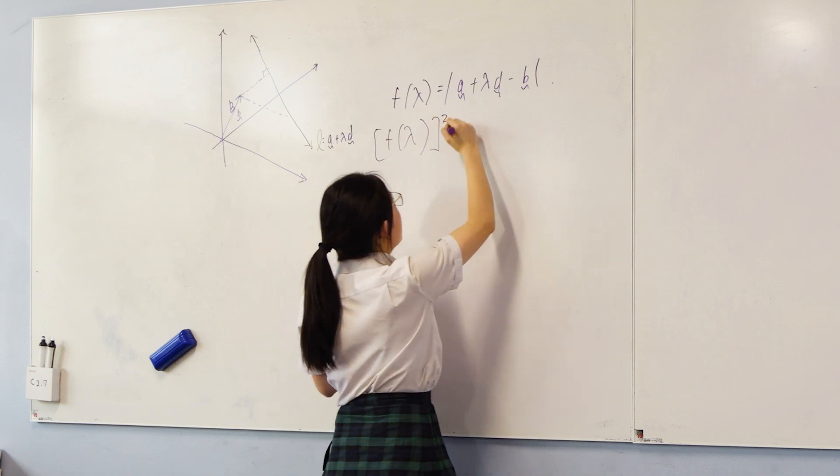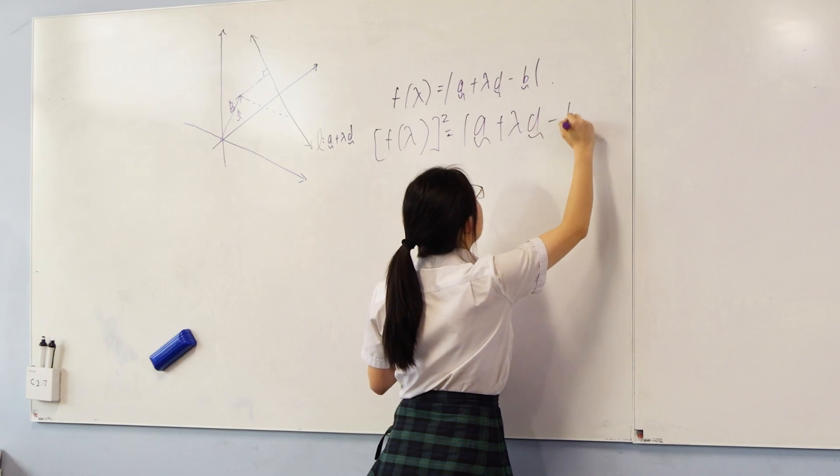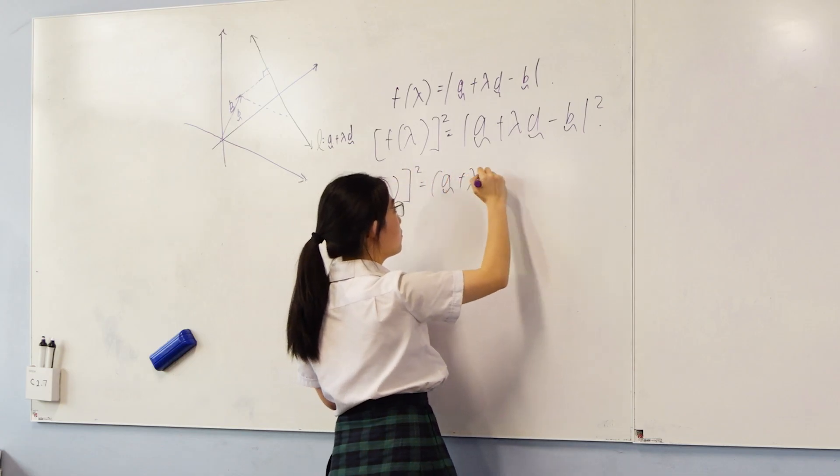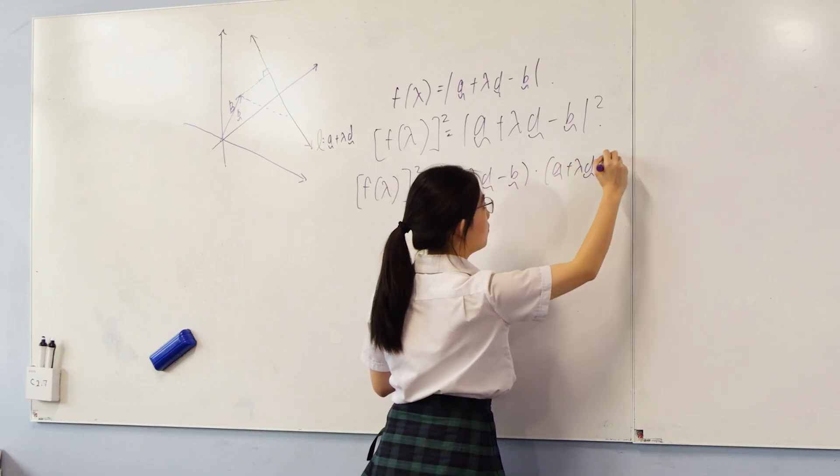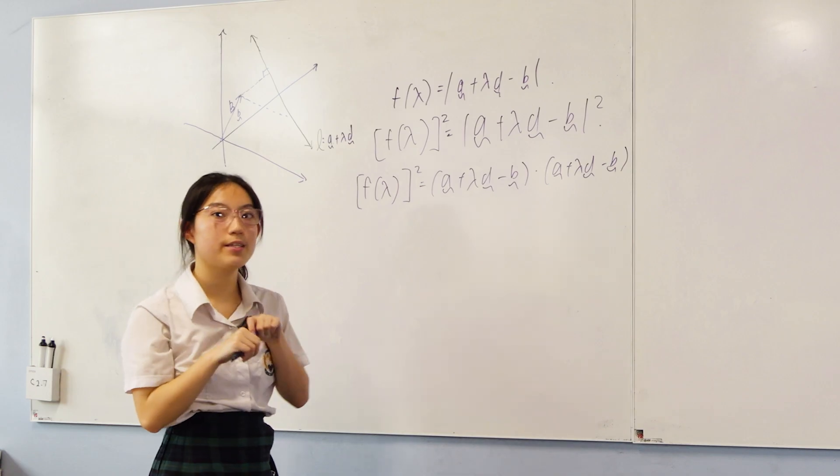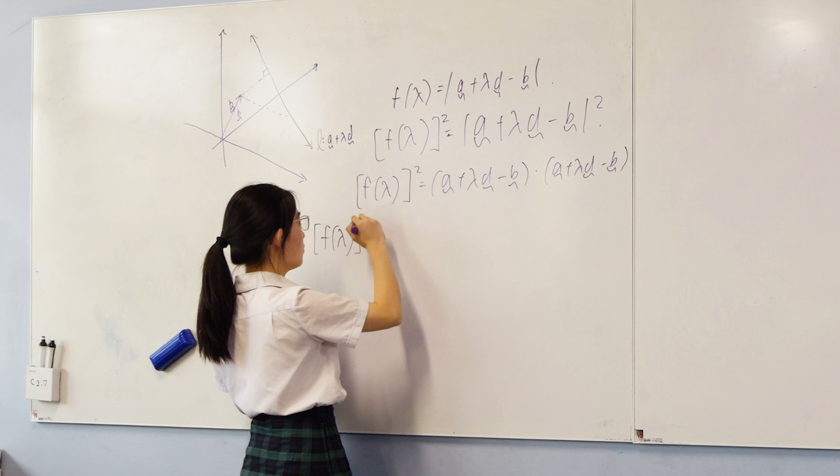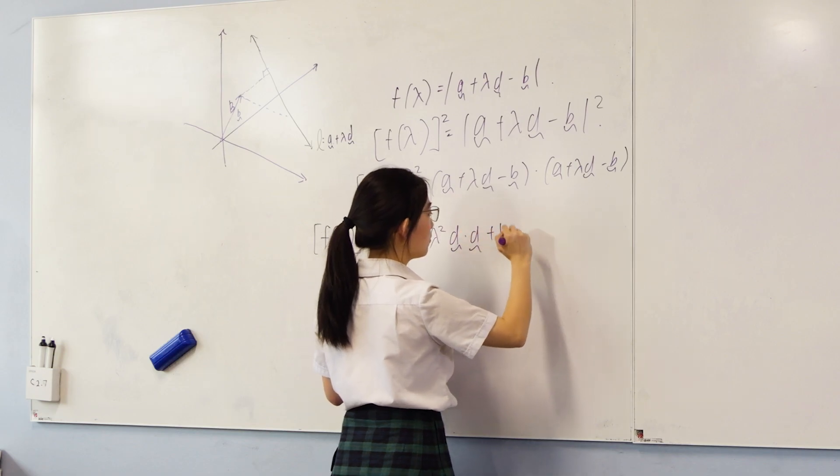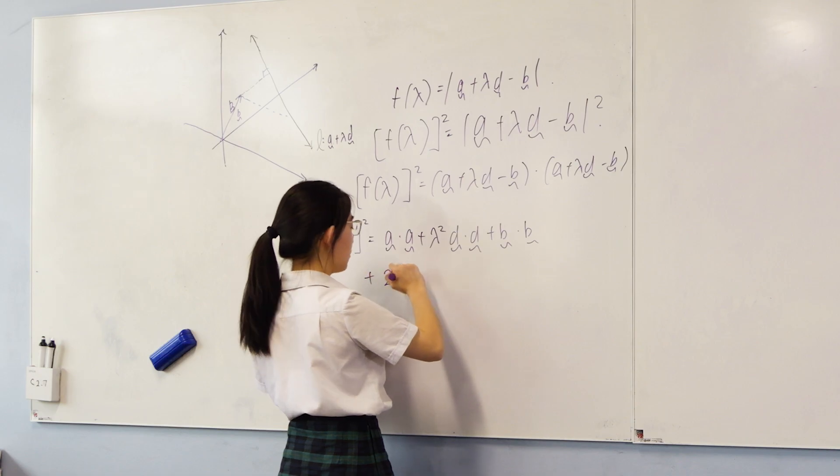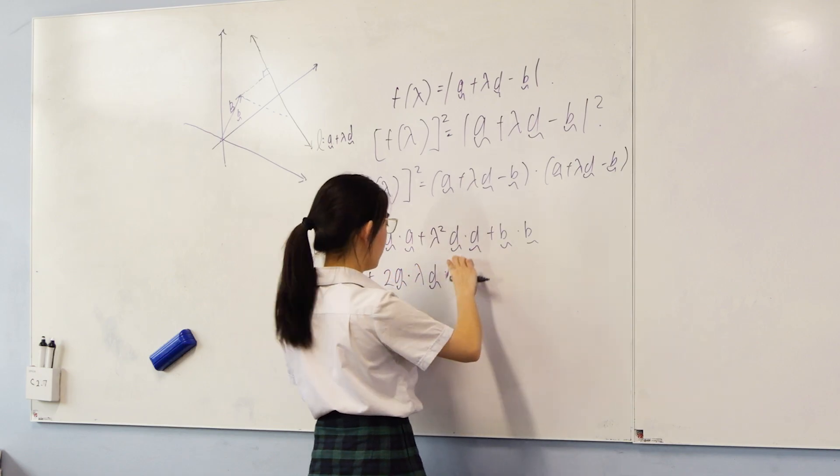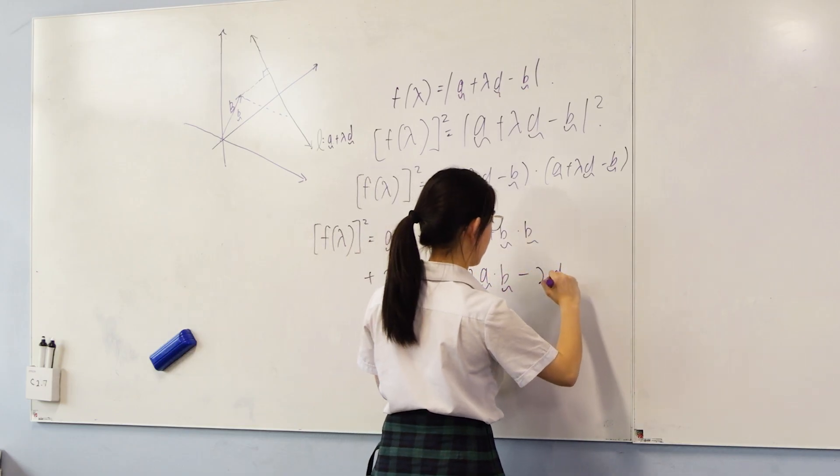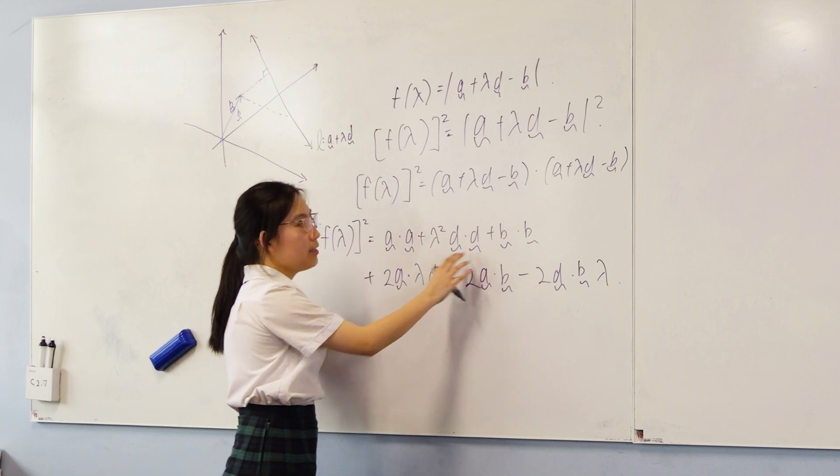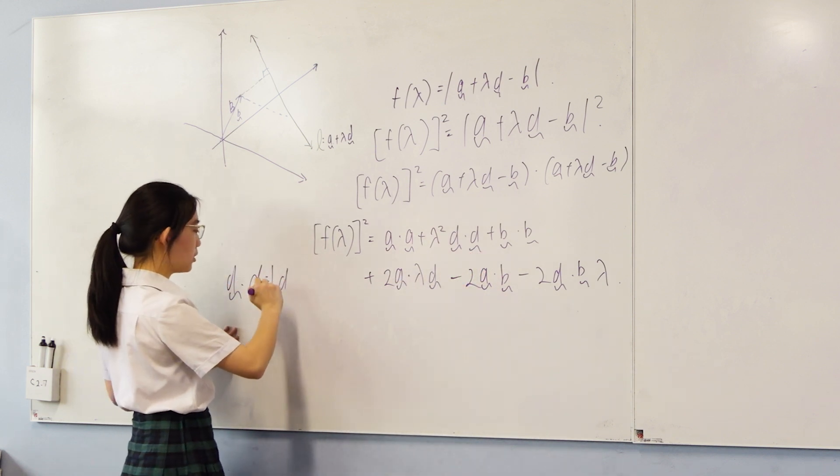Squaring both sides will give us an expression that we can simplify. Here what we're doing is expanding everything as dot products. What this gives is a quadratic lambda squared, which we can simplify further, because we know that d dot d, which is equal to the magnitude of d vector all squared, equals 1.